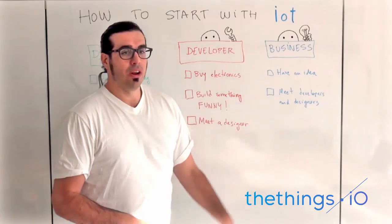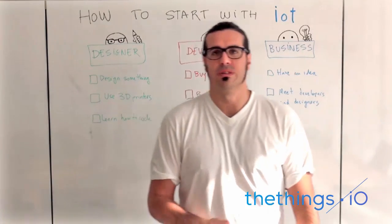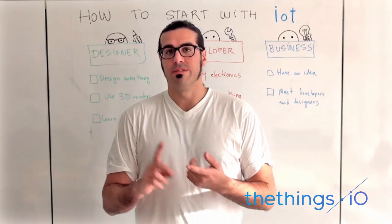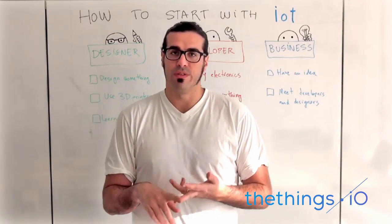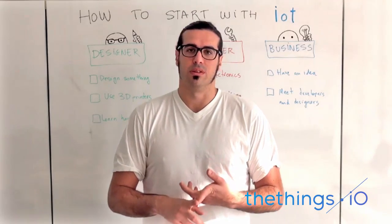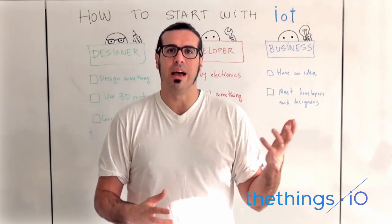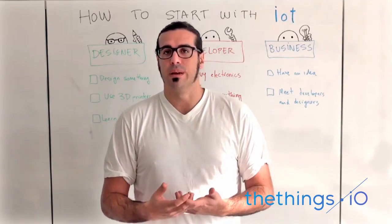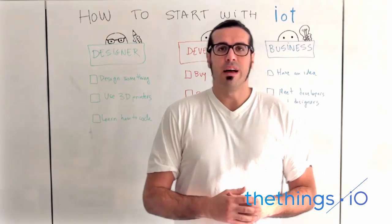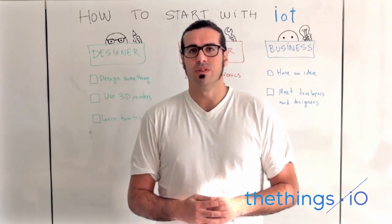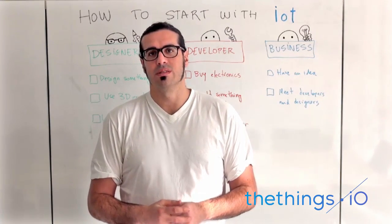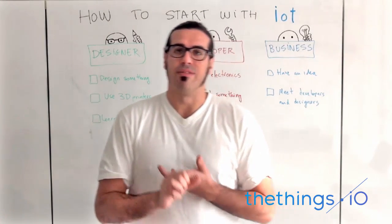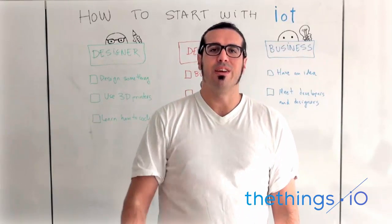My suggestion is to go to meetups of Internet of Things, meetups of entrepreneurship, and there you can find developers and designers who have a lot of skills but don't have the business expertise that you can bring to them. So these are my five suggestions if you want to get started on the Internet of Things: team up with interesting people, learn how to code, and just have fun. See you next IoT Friday — bye-bye!